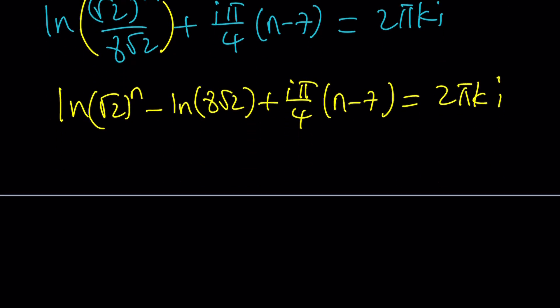Now we can go ahead and bring this n to the front and write this as n·ln(√2) - ln(8√2) + iπ/4·(n-7), and that's equal to 2πki.